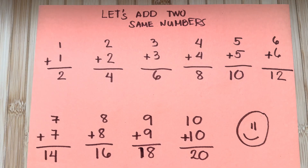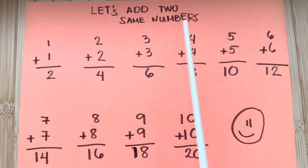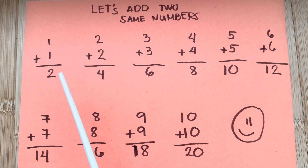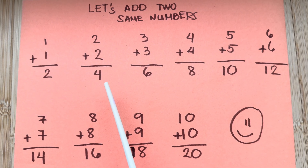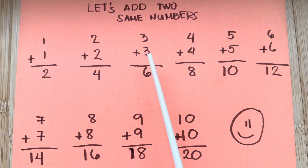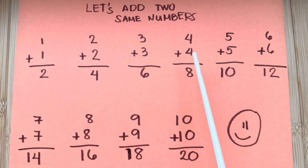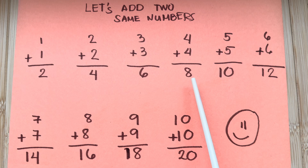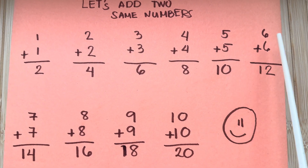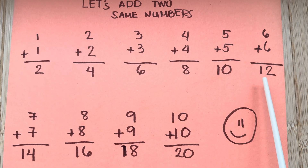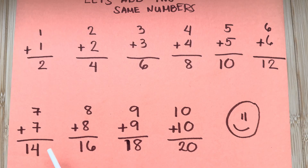Let's summarize. Let's add two same numbers. 1 plus 1 is equals to 2. 2 plus 2 is equals to 4. 3 plus 3 is equals to 6. 4 plus 4 is equals to 8. 5 plus 5 is equals to 10. 6 plus 6 is equals to 12. 7 plus 7 is equals to 14.